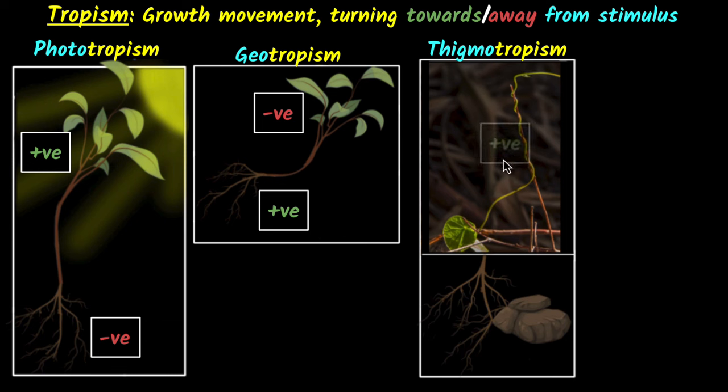And you can see this one displays positive thigmotropism because it's turning towards the stimulus. And look here, it's turning away, so it is negative thigmotropism.